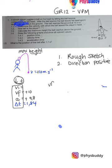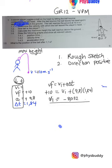I'm going to use vf = vi + a·Δt. Final velocity is positive 10, initial velocity is what we're looking for, acceleration is positive 9.8, and time is 1.84. We put this into our calculator and get negative 8.032. The negative tells us the motion was upwards, because we took down as positive. So the initial velocity was 8.032 meters per second upwards.